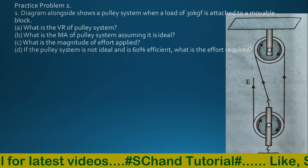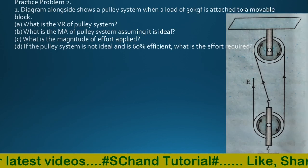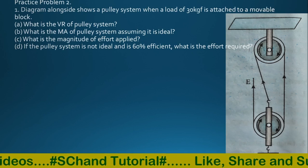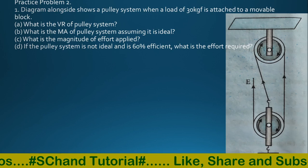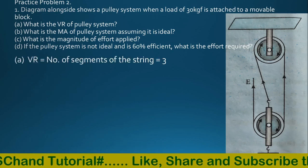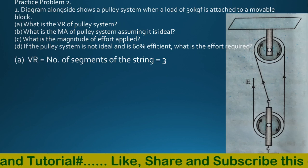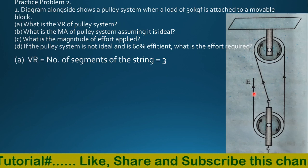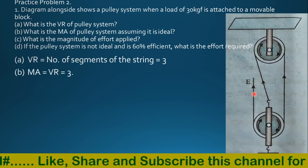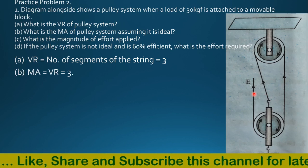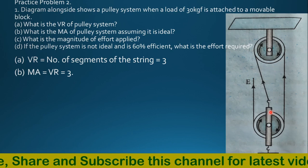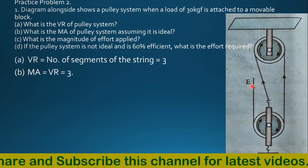The diagram shows a load of 30kg force attached to a movable block. What is the velocity ratio of the pulley system? Velocity ratio is the number of segments of the string, which equals 3 — strings 1, 2, 3. Since the effort is applied in an upward direction, mechanical advantage equals velocity ratio, which equals 3. The number of pulleys is 3, so mechanical advantage must be 3 because effort is applied upward.